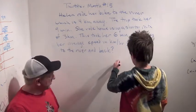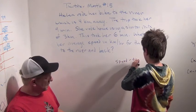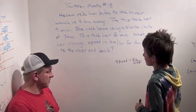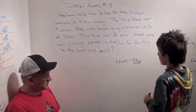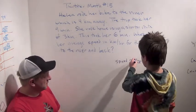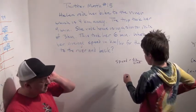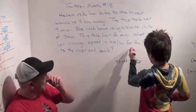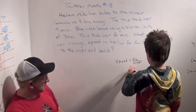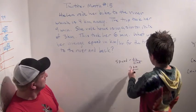I know speed equals distance over time. So we need the total speed, and that means the total distance and the total time. It doesn't ask for the total speed — it's the average speed. The entire trip to the river and back... so it's 7 kilometers over 15 minutes.